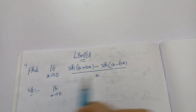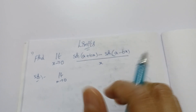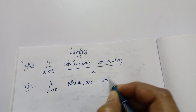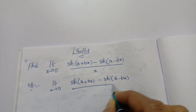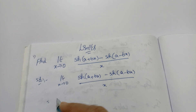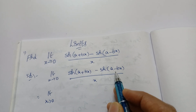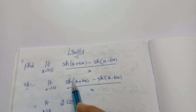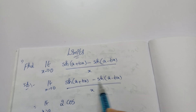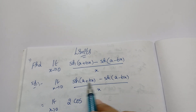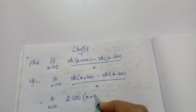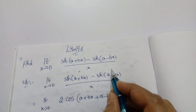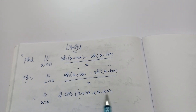First, every time, whatever question is there, write 'given' compulsory. I'm writing: limit x tends to 0 of [sin(a + bx) − sin(a − bx)] / x. Now apply sin C − sin D formula: it equals 2·cos[(C + D)/2]·sin[(C − D)/2]. Here C is (a + bx) and D is (a − bx). So C + D = (a + bx) + (a − bx).